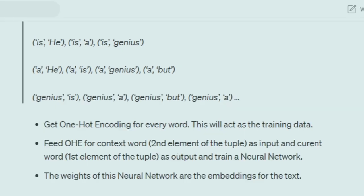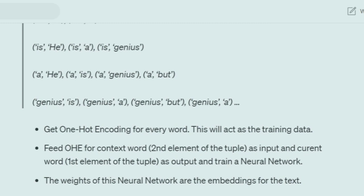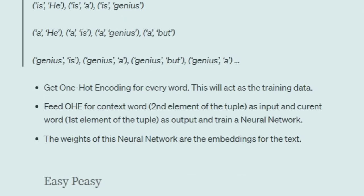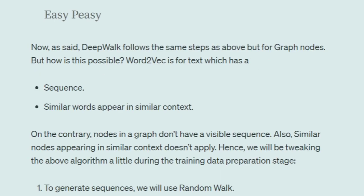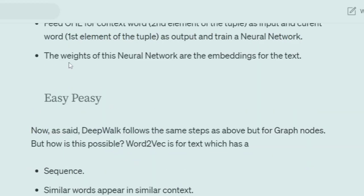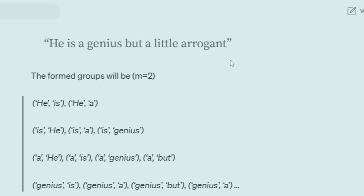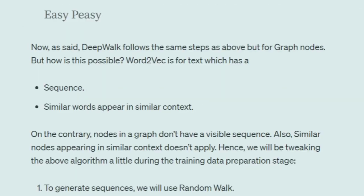The weights of this neural network that we train become the embeddings for the text. We generate pairs, take the neighborhood word as input, set the center word as the output, apply one-hot encoding, train a neural network, and the weights become the embeddings. DeepWalk is word-for-word the same as Word2Vec, but there are a couple of things to clarify — Word2Vec is for text which has a sequence, but in case of a graph you won't have sequences.